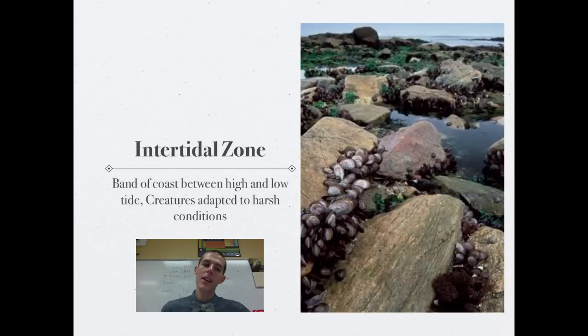A couple left. You've got the intertidal zone. This is the band of coastline between high and low tide. So the high tide will come in to a point and then low tide will go back out. Whatever area is exposed between that high tide and low tide is known as the intertidal zone. Now, the animals that live in this area have to be adapted to very harsh conditions because when they're covered in water, great, pretty constant temperature, things are safe, things are happy. But then the tide goes out and they're exposed to the elements.